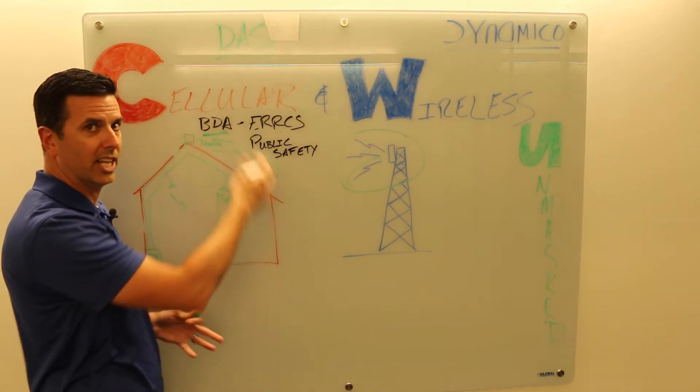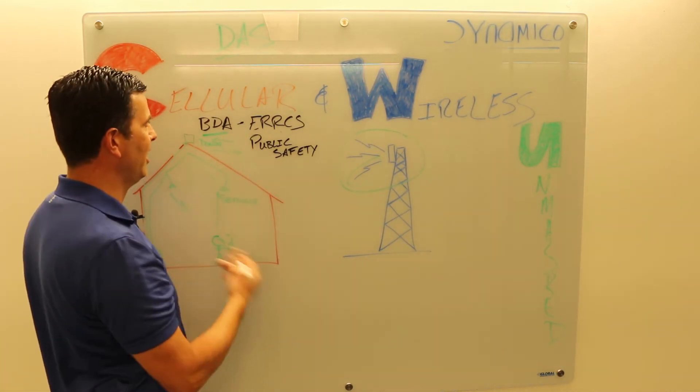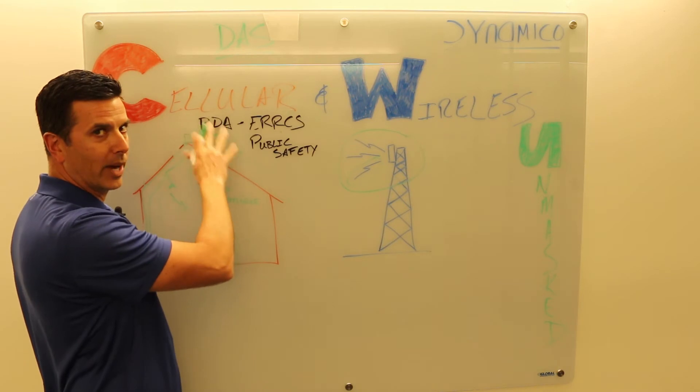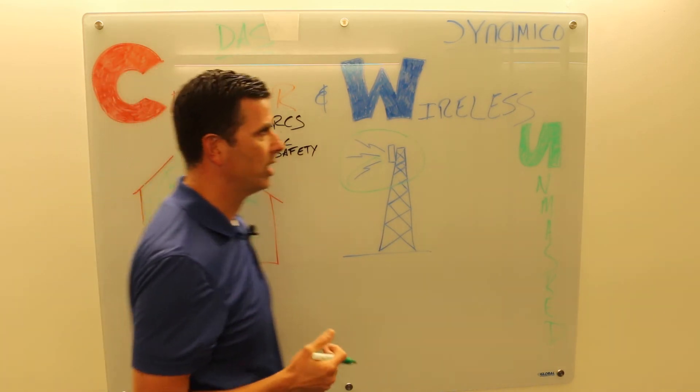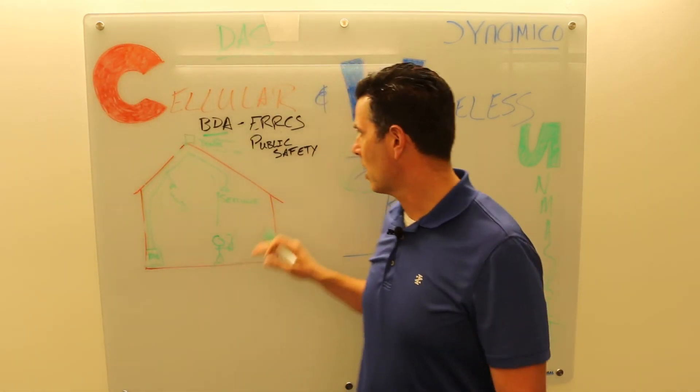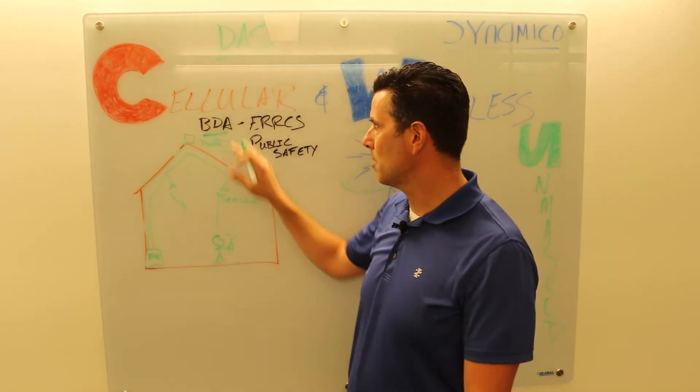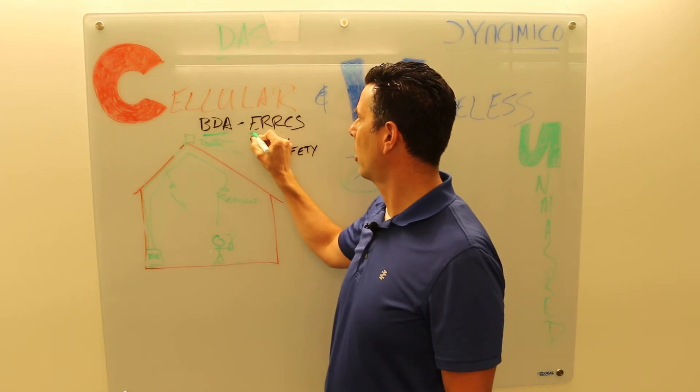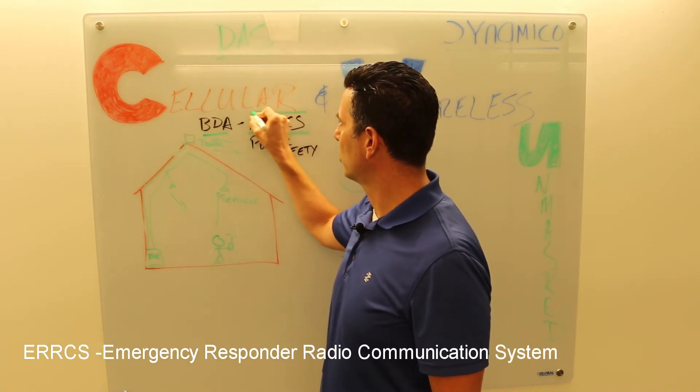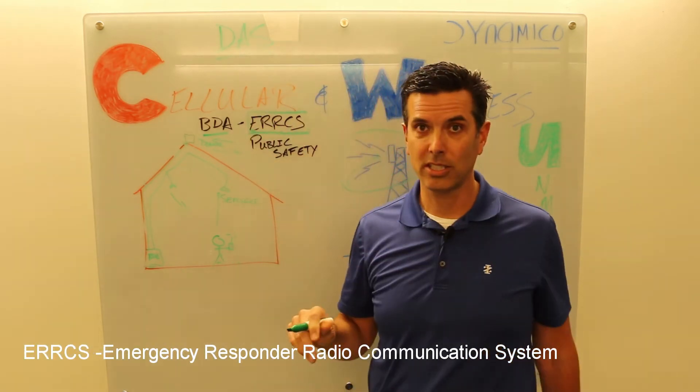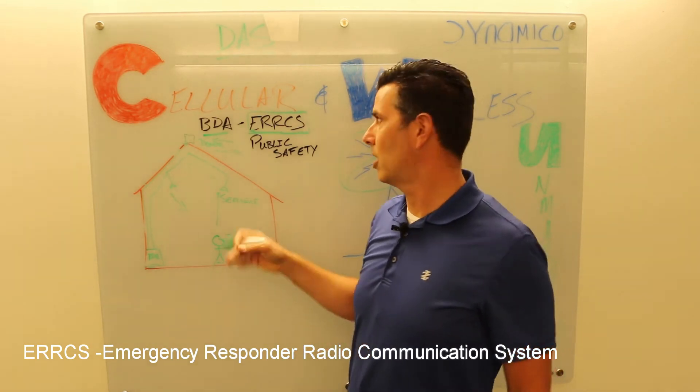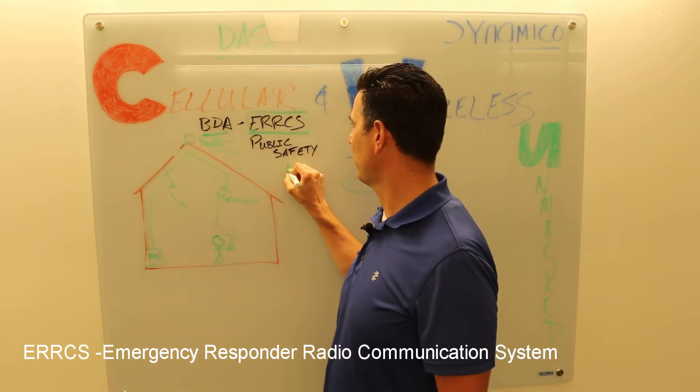It amplifies both directions, hence the nomenclature bi-directional amplifier. Nice units, these are very common in the past in cellular. Nowadays you mostly see BDAs when it comes to ERCS, emergency responder radio communication systems. Sometimes people just call them IRCS, but it's public safety DAS.